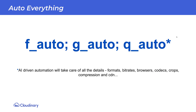Rely on your DAM to do everything for you — auto everything. Your DAM can deliver the right format, quality, and gravity of your assets. Format means what device and browser you are delivering to. Quality: is this a banner or a thumbnail? Can we reduce the quality without compromising the visual outcome?